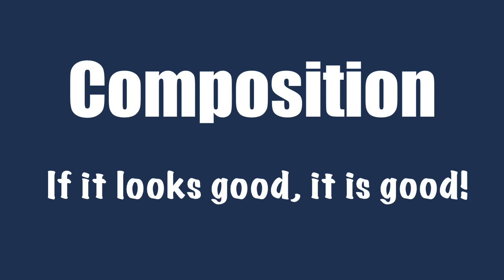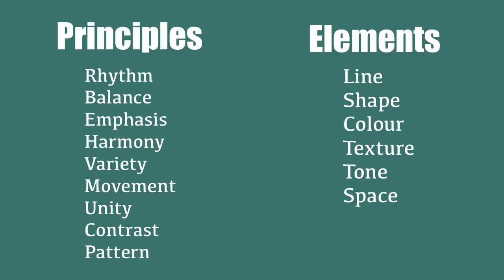When we create a piece of art, the way we put it all together is the composition. If it looks good, it is good. But what if things don't look just right? Here's a list of some of the principles and elements of design, and I'm sure you're familiar with many of them. Is it possible to create a good piece of art without knowing these principles and elements? Absolutely. But it could take a lot of trial and error. Without getting too bogged down with the theory, let's put these into practice.